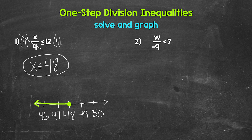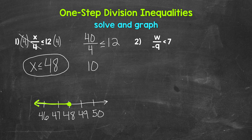One last thing we can do is check a solution to make sure we are correct. Let's use 40 since we are dividing and that will work nicely with the 4. So 40 divided by 4 is less than or equal to 12. 40 divided by 4 gives us 10, and 10 is less than or equal to 12 — so we are correct. Let's also check 48: 48 divided by 4 is 12, and 12 is less than or equal to 12. So 48 works as well.